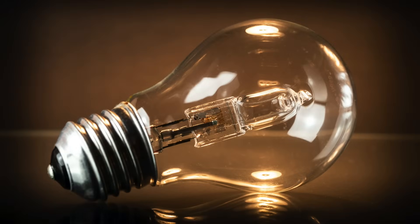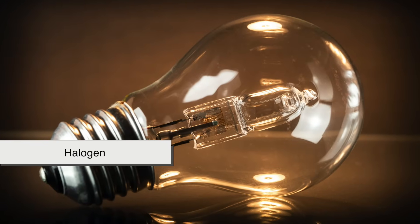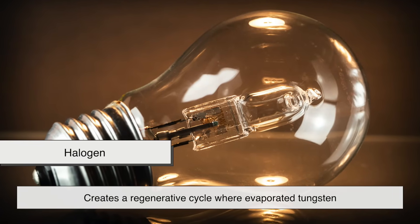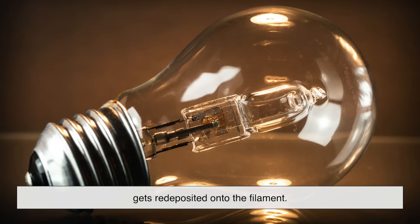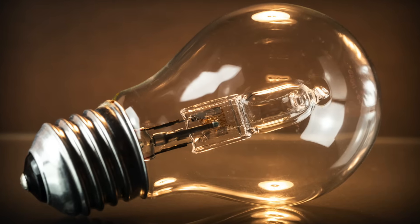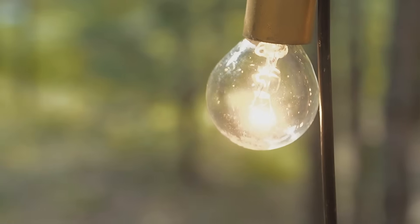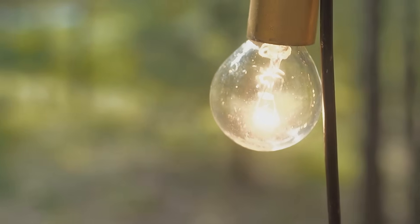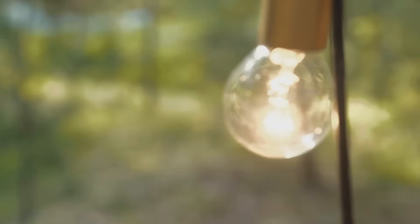To help counter this, some bulbs use a gas like halogen, which creates a regenerative cycle where evaporated tungsten gets redeposited onto the filament. That's how halogen bulbs last longer than traditional ones. They recycle themselves in a way.